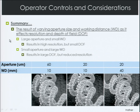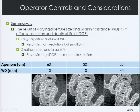In summary, varying aperture size and working distance affects both resolution and depth of field. A large aperture and small working distance gives high resolution but a small depth of field — nice resolution but background images blur. A small aperture and large working distance gives a large depth of field, with both foreground and background in focus, but lower resolution compared to the first configuration.